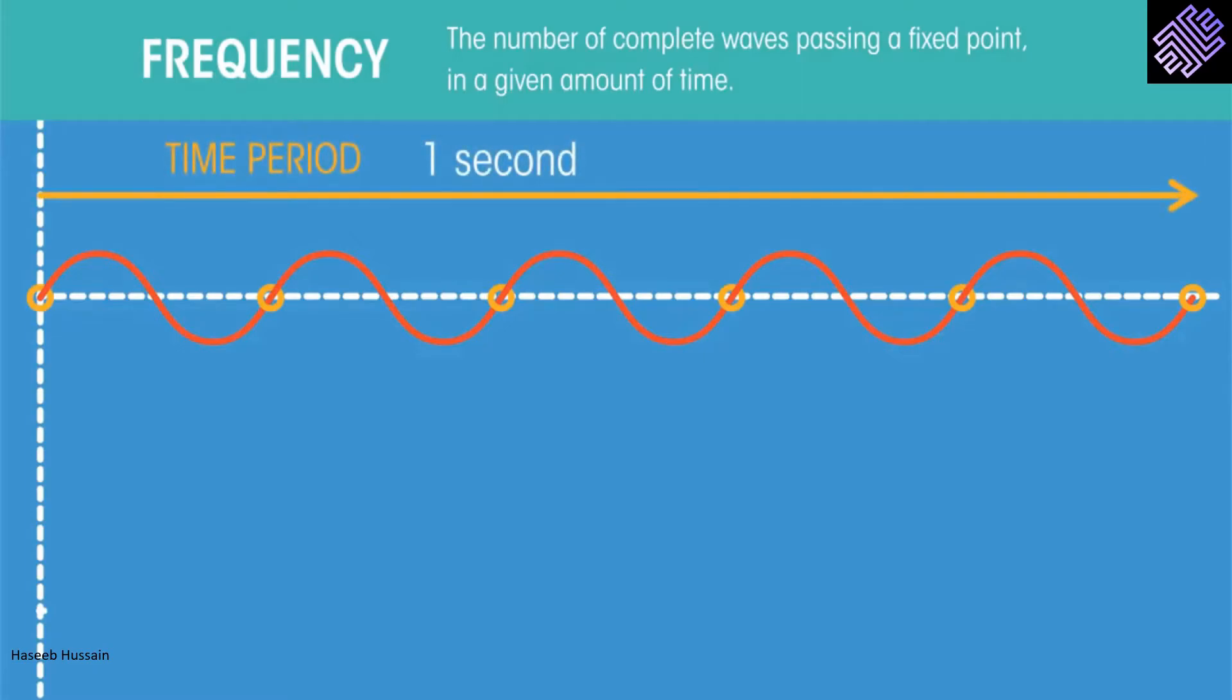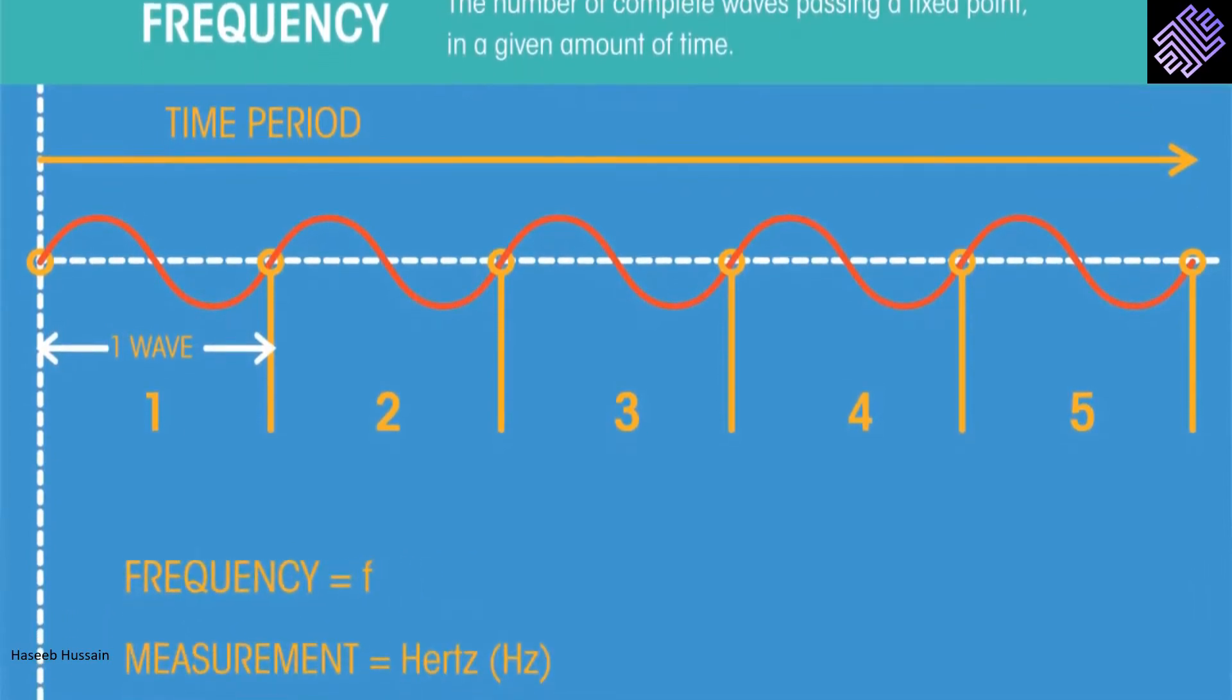This is what one complete wave looks like. So, if this was our time period, the frequency would be 5 because 5 complete waves are present.